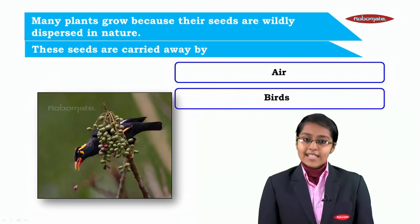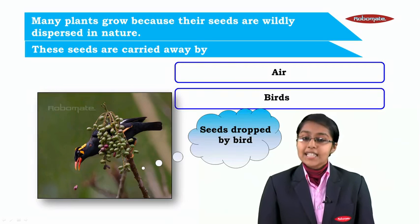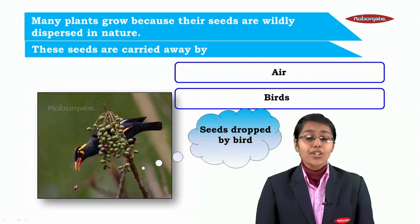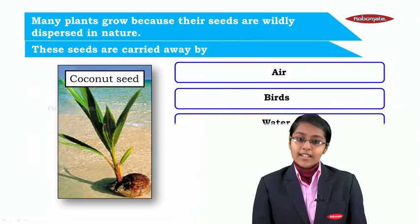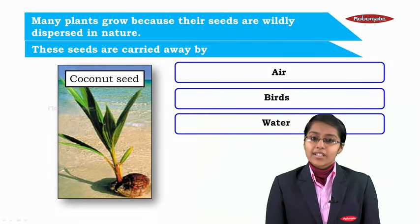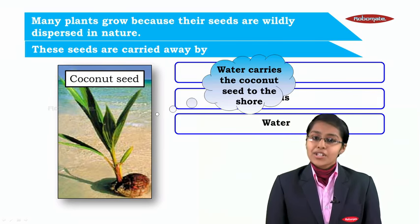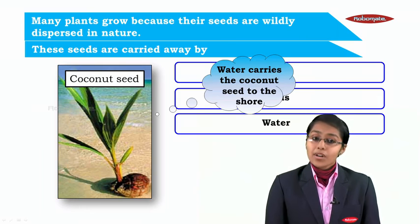Next is birds. In the picture you can see seeds which are dropped by birds. Next is water. In the picture you can see a coconut seed carried away by water to the shore.